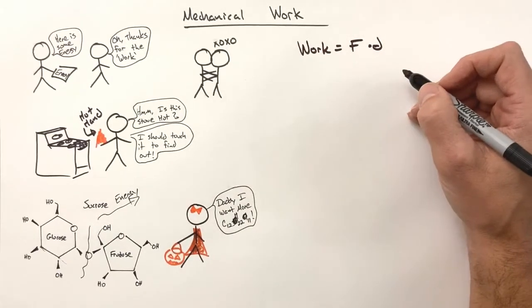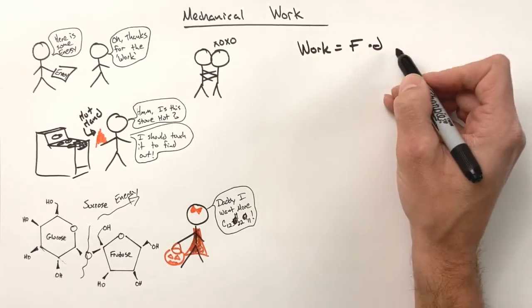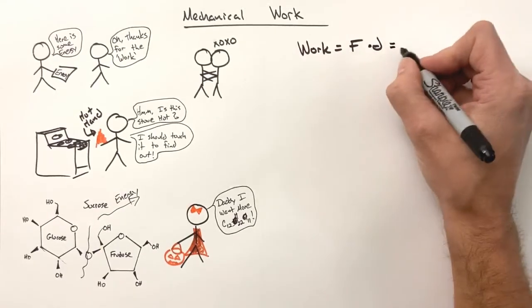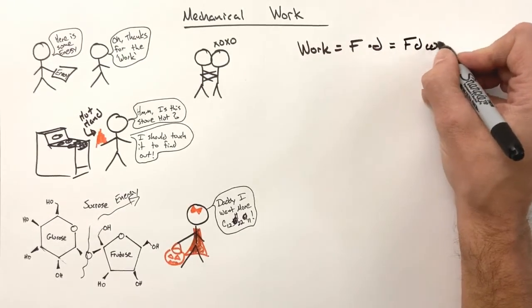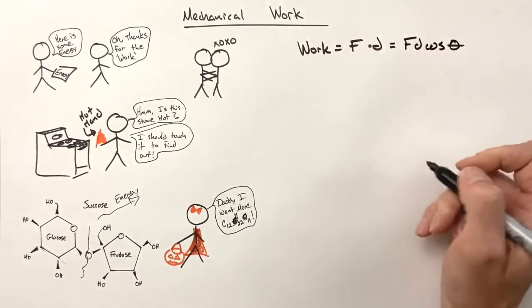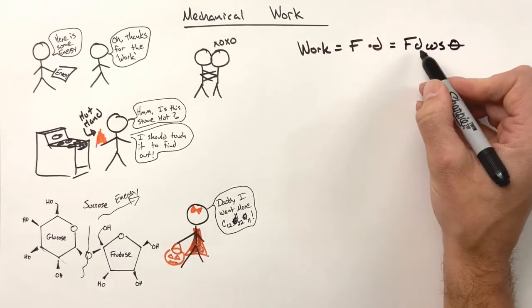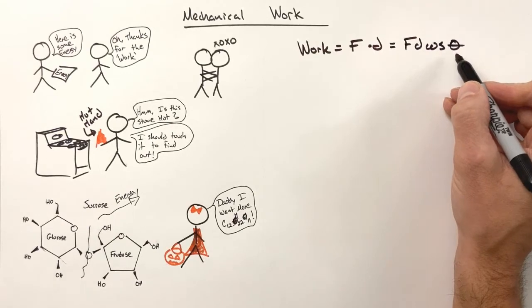Luckily, for high school physicists everywhere, the formula F dot D reduces down to F D cosine theta, where F is force, D is displacement, and theta is the angle between them.